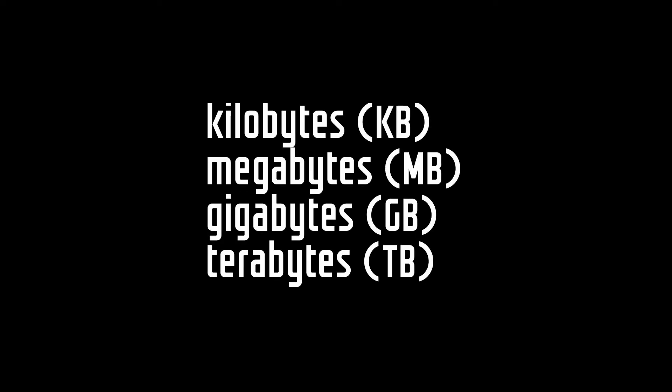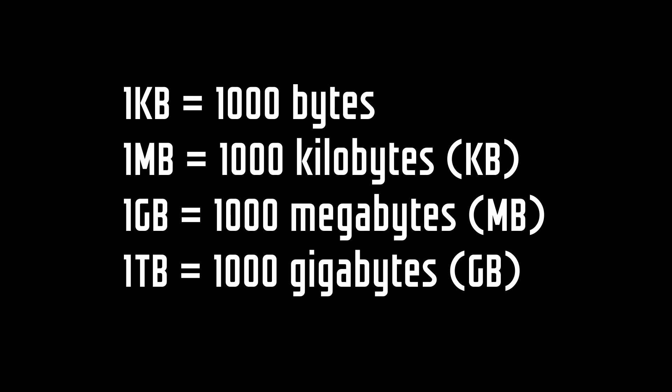We have kilobytes, megabytes, gigabytes, and terabytes. One kilobyte equals a thousand bytes. One megabyte is the same as a thousand kilobytes. One gigabyte is the same as a thousand megabytes. And one terabyte is the same as a thousand gigabytes. And there are even bigger units of measurement as well.